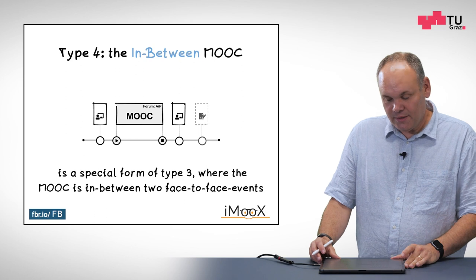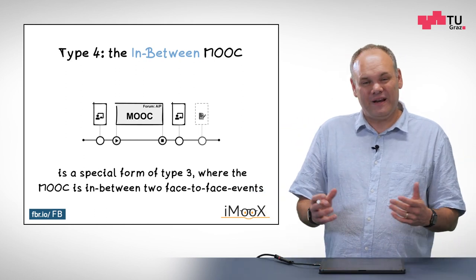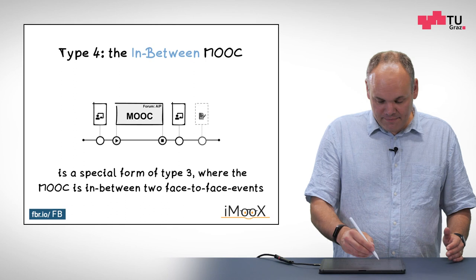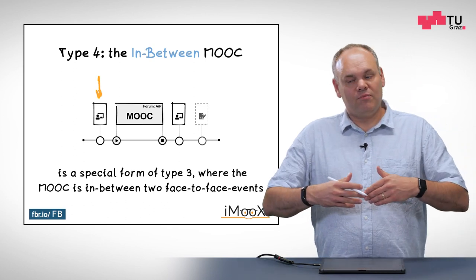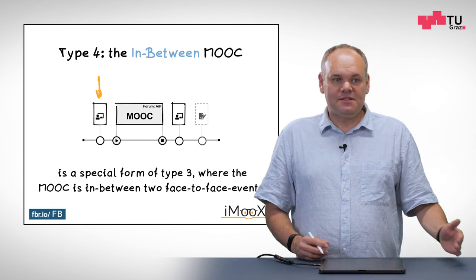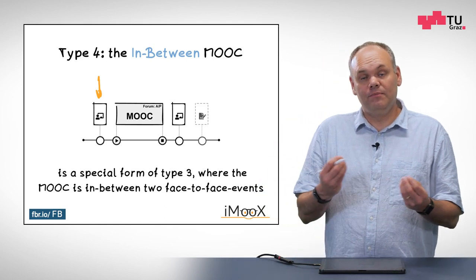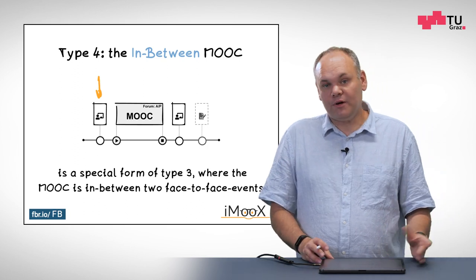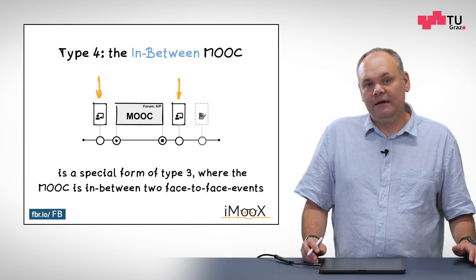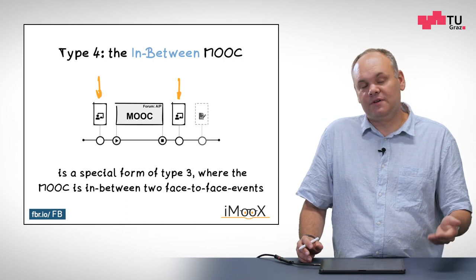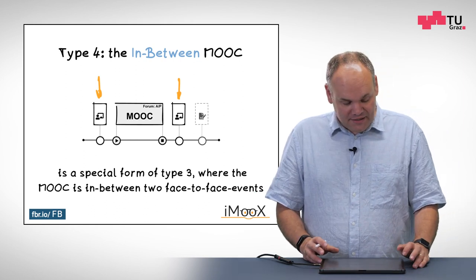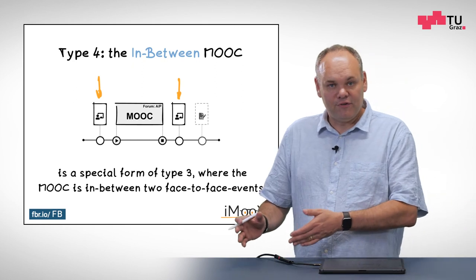Type four is the in-between MOOC, often used in adult education. You come for a first day workshop where the teacher gives a longer face-to-face input. Then there is an online MOOC phase where you deepen your interest and get more information. Afterwards, there is a closing face-to-face event — maybe a one-day or half-day workshop — and then the whole situation gives you your grades. It's a special form of type three, but with a clear opening and closing face-to-face event.